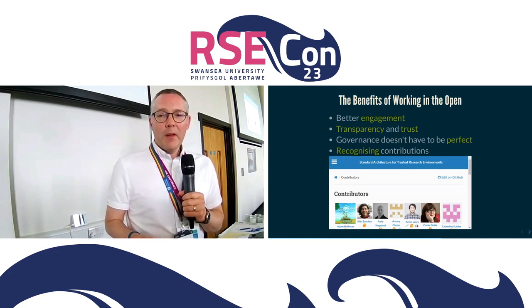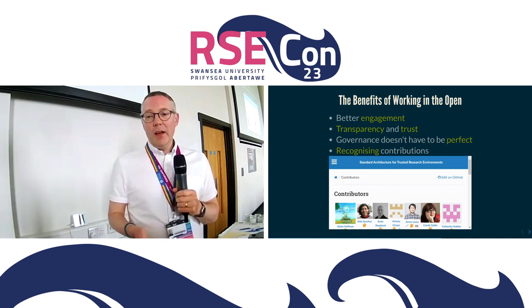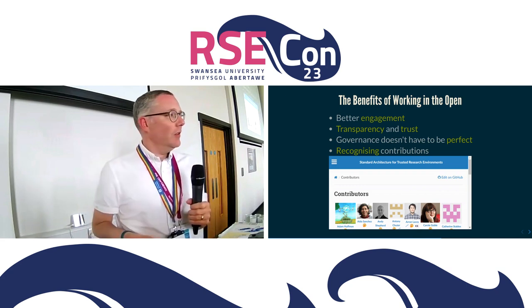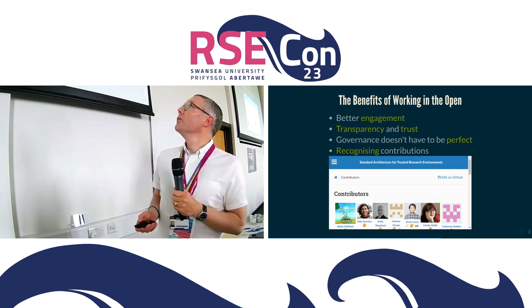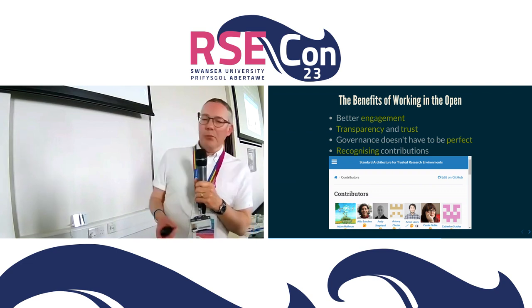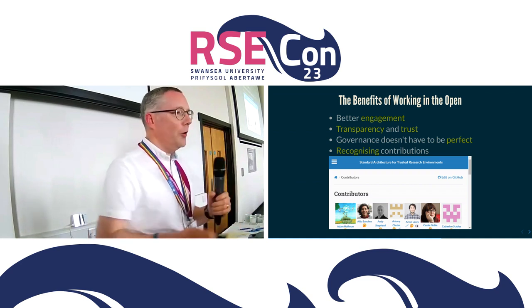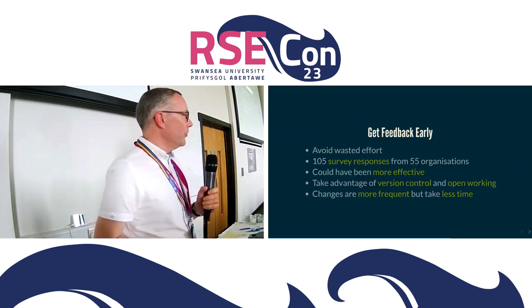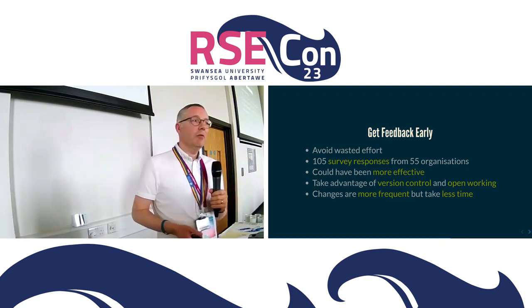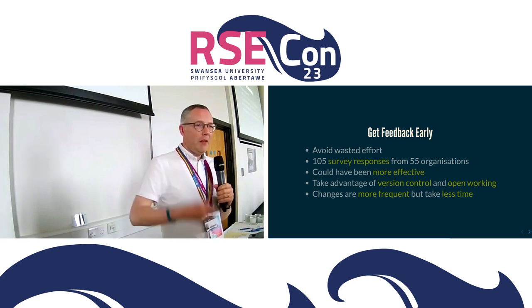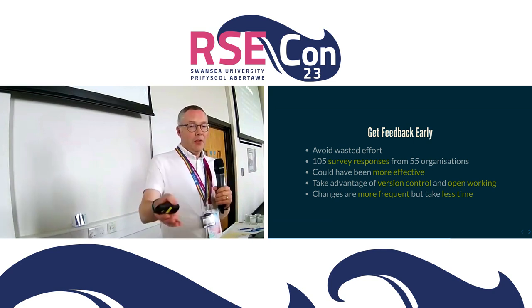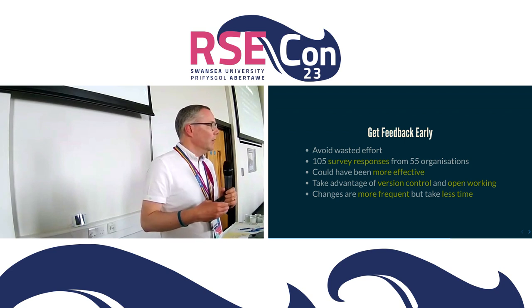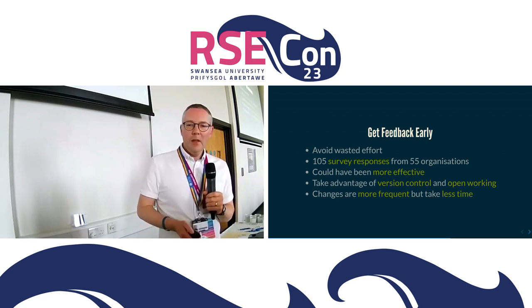So what have we learned? The benefits of working in the open are better engagement, transparency, and trust. It doesn't have to be perfect — you can change things, as long as you're open and transparent about it. If you make a mistake, change it and acknowledge it — that's fine. You get to acknowledge everyone who's contributed to the project. There are probably 30 or 40 people who contributed just in the code base, and obviously many more via other means. This was a very short project — only nine months — so we needed to get feedback quickly and very early. By getting input on a constant basis, we could respond and react and be very agile. The survey we ran very early on had over 100 responses from 50-odd organizations, and that made our first iteration of the specification very easy.